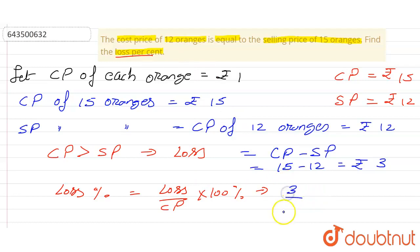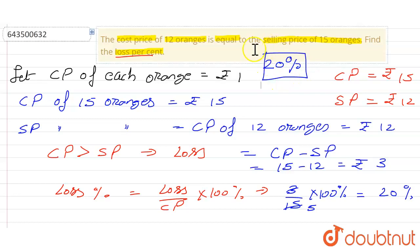So 3 divided by CP is 15, times 100 percent. If I just solve it, it will go 5 times, 100 by 5 is 20 percent. So loss percentage is 20 percent, and that is the answer of the given question.